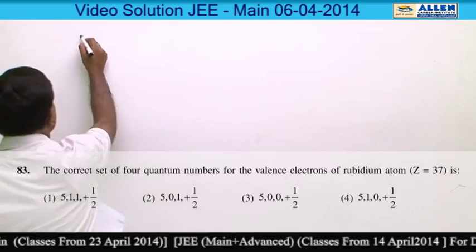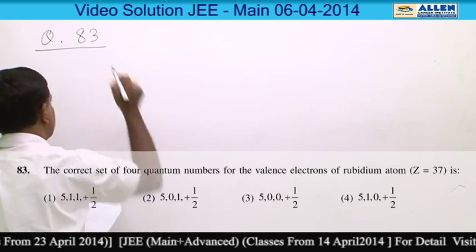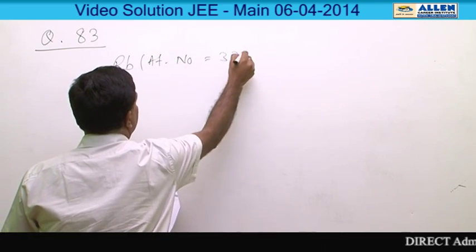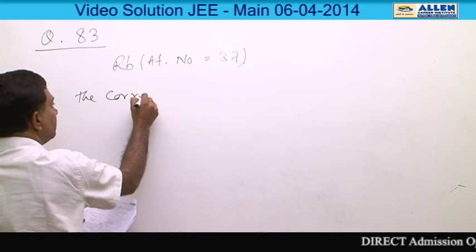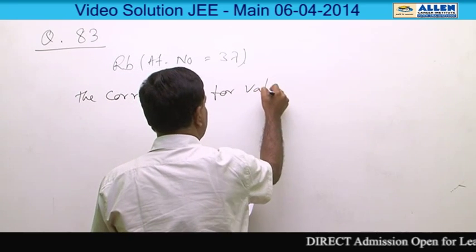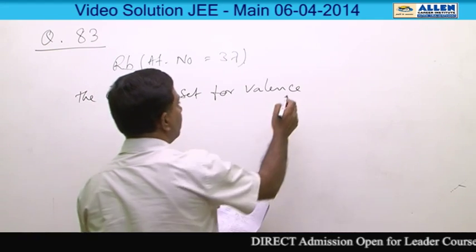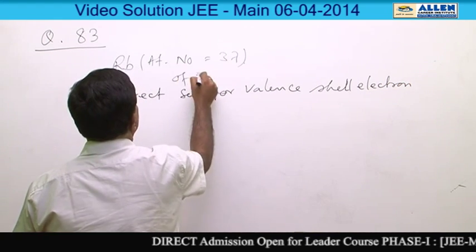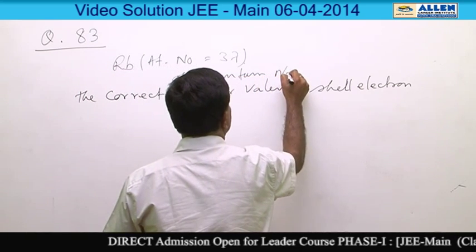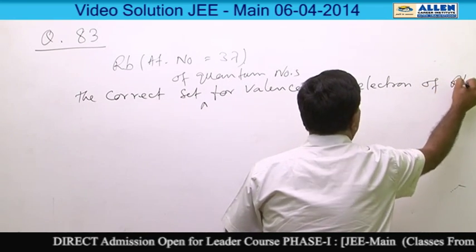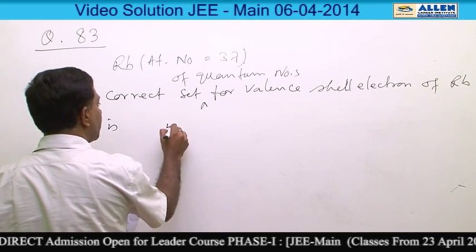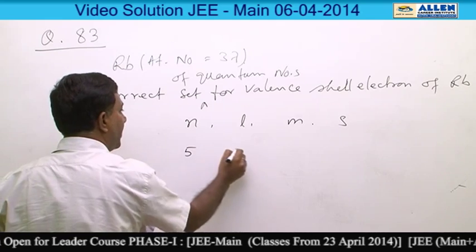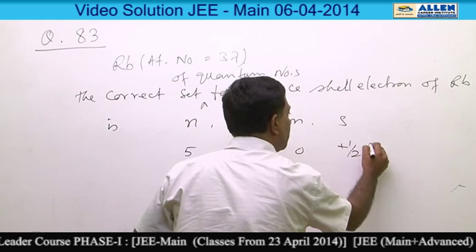Question number 83. Rubidium has atomic number 37. The correct set of quantum numbers for the valence shell electron of Rubidium is: n = 5, l = 0, m = 0, s = +1/2 or −1/2.